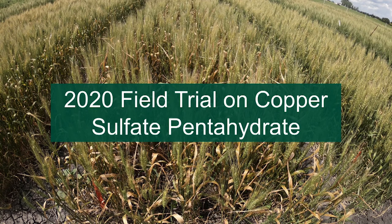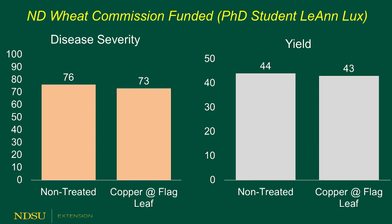When looking at the role of copper application and how they work, results have been inconsistent. A recent trial done in 2020 with a PhD student funded by the North Dakota Wheat Commission looked at the application of a copper fungicide applied at flag leaf. When looking at both the disease data and the yield data from this trial across five varieties, we found very minor differences. Because of that, we're going to expand on this research and include other products and also other timings for the future.